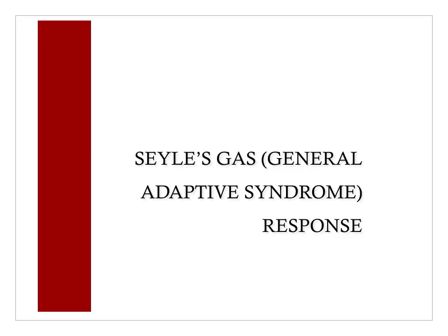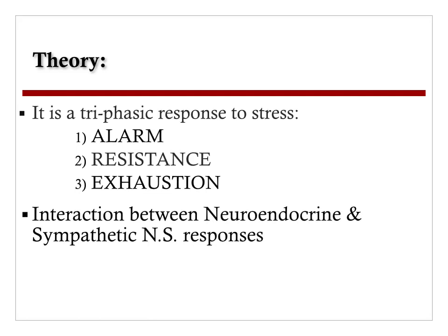Selye's GAS response is a triphasic response to stress — an interaction between the neuroendocrine and sympathetic nervous systems — broken into three distinct phases. The alarm phase, which is the acute response. The resistance phase, which is the moderate-term response. And the exhaustion phase, which is the long-term response. Illness and disease do not occur until we get to that exhaustion point.